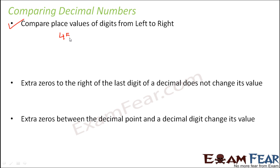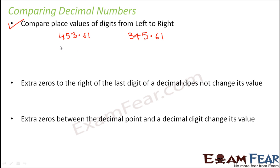Let's say that you have a decimal number 453.61 and another decimal number 345.61. If you look at these two numbers, both are decimal numbers made up of the same digits — 3, 4, 5, 6, and 1. These are the five digits which make both of these numbers. It is just that the position of the digits has been changed.